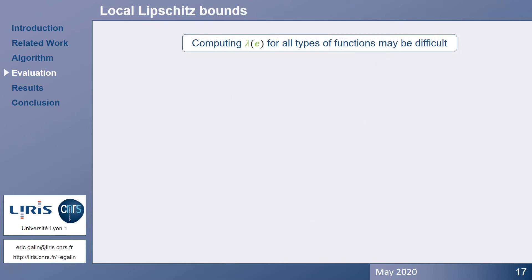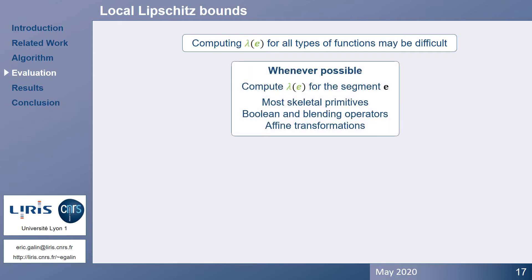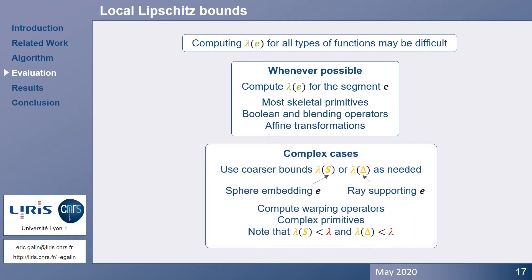Before reviewing different types of nodes, recall that computing lambda over a segment may be difficult in some cases. We rely on the following strategy. Whenever possible, compute lambda of E as accurately as possible. This can be effectively achieved for primitives built from convex skeletons, blending, and boolean operators. Complex cases include warping operators that deform the segment into a curve, and non-convex skeletal primitives. In those difficult cases, we resort to coarser bounds, which are simpler to compute.